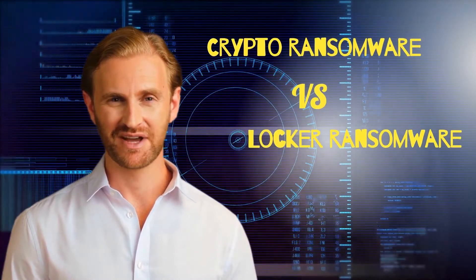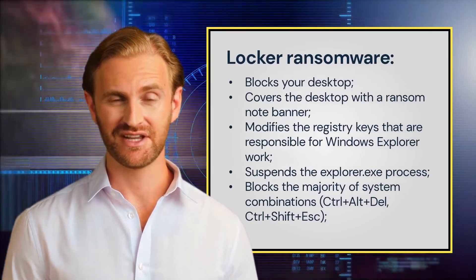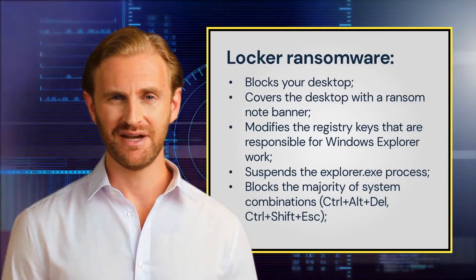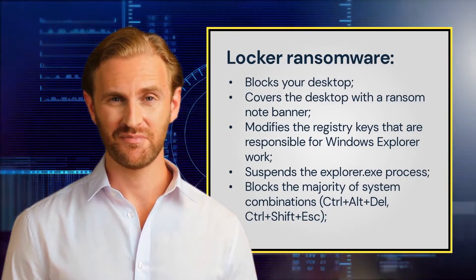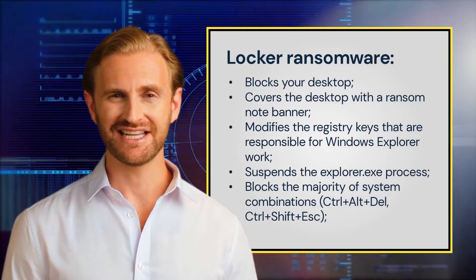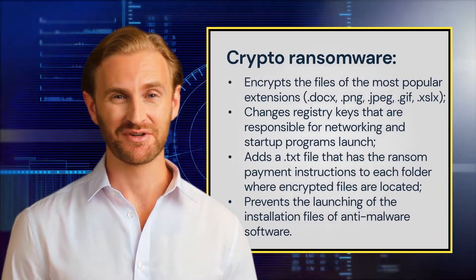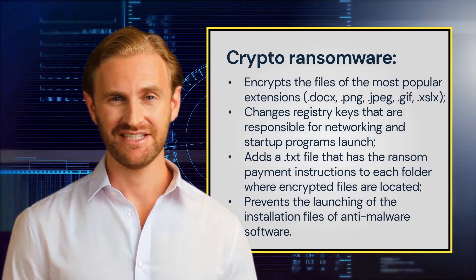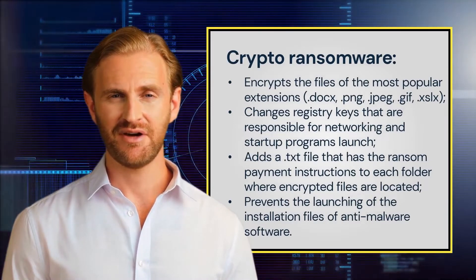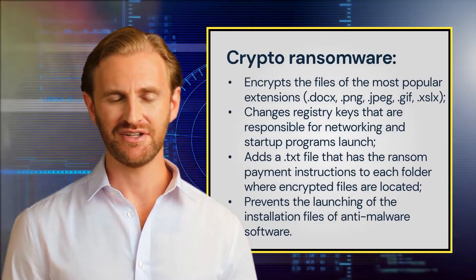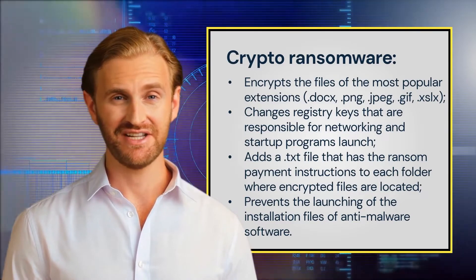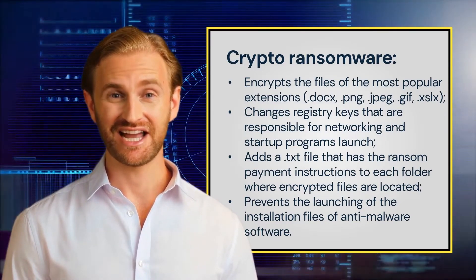Although there are countless strains of ransomware, they mainly fall into two main types: Crypto ransomware and Locker ransomware. Locker blocks basic computer functions — for example, you may be denied access to the desktop while the mouse and keyboard are partially disabled. The aim of crypto ransomware is to encrypt your important data, such as documents, pictures, and videos, but not to interfere with basic computer functions. This spreads panic because users can see their files but cannot access them.